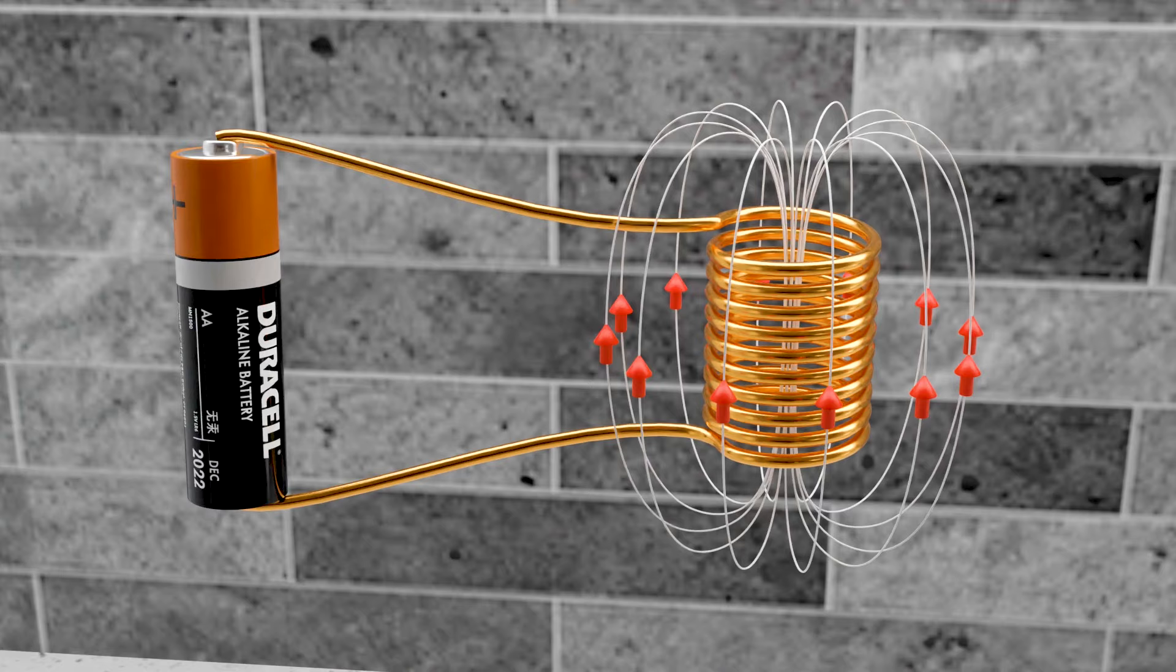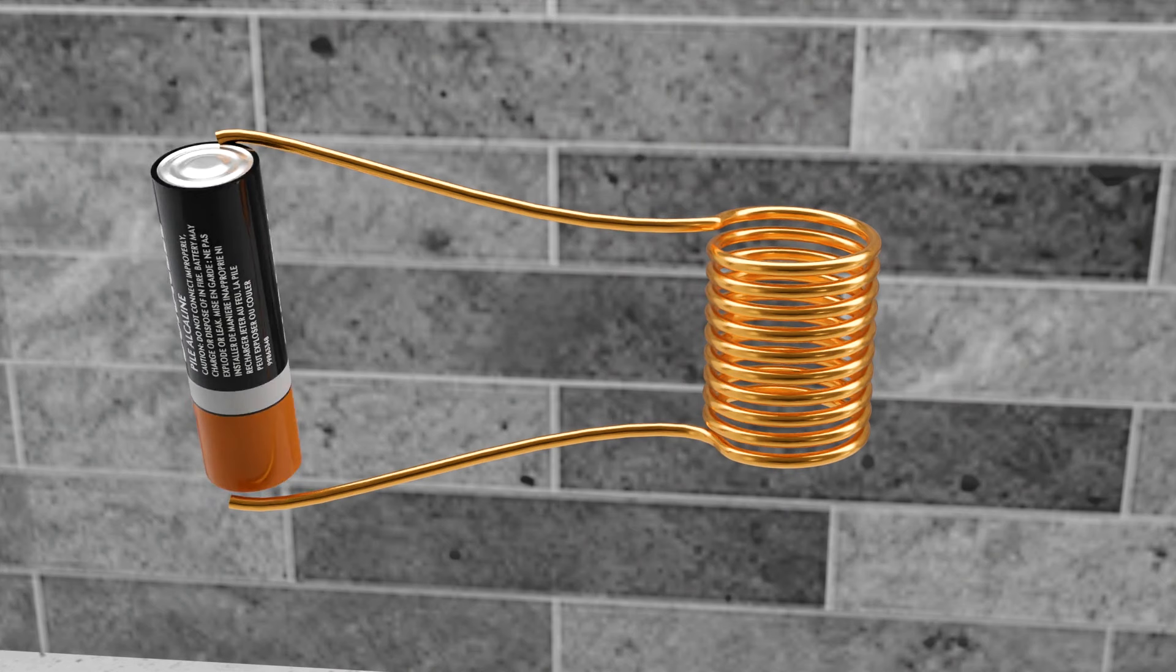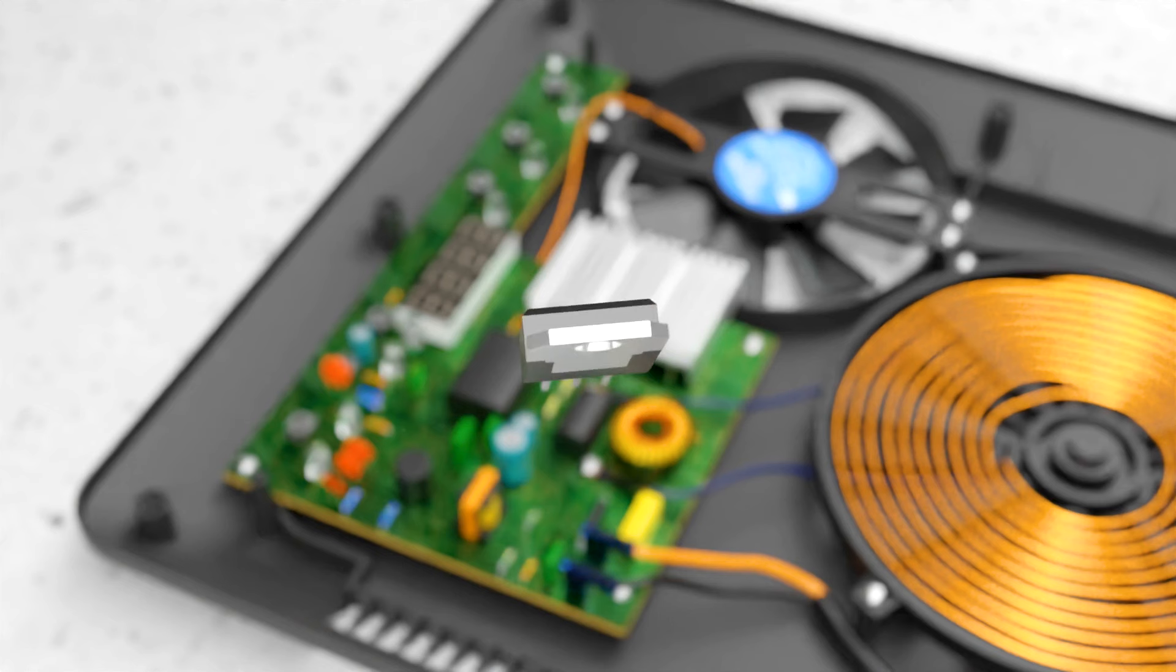Similar to this battery, an oscillator acts like a source with changing polarity for our induction coil. Please note that it is a very rough explanation of an oscillator. In reality, an oscillator uses controlled power switches for its working.